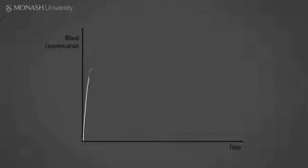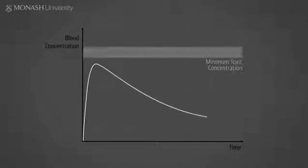The minimum toxic concentration is the minimum blood concentration that produces toxic effects. As shown here, ideally we want the blood concentration of drug to always be below the minimum toxic concentration. Again, the shading indicates person-to-person variability and the minimum toxic concentration is an average value.